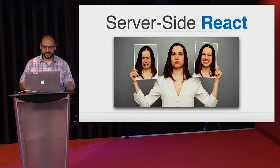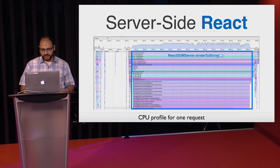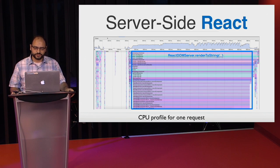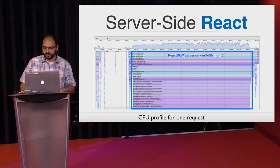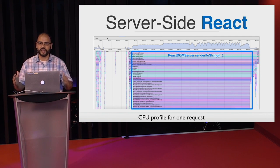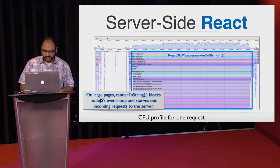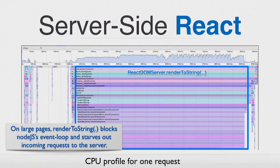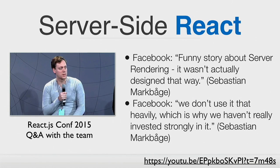Server-side React was great, but also it was slow. We took profiles on the server and saw that most of our time was spent running React's renderToString — this is how you render a React component to a string. For large pages, React was blocking Node's event loop, causing incoming requests to return slower because our servers were busy executing renderToString. We found that Facebook says React wasn't actually designed this way, and Facebook themselves don't actually use React on the server very heavily.